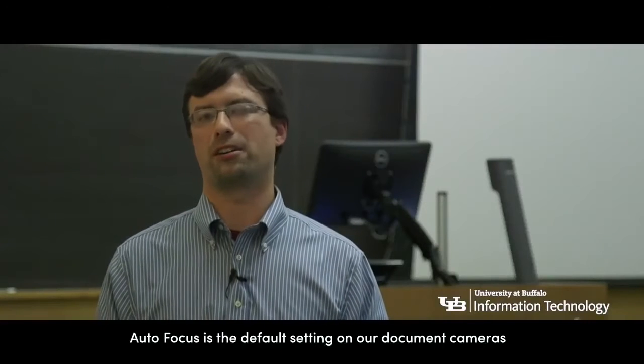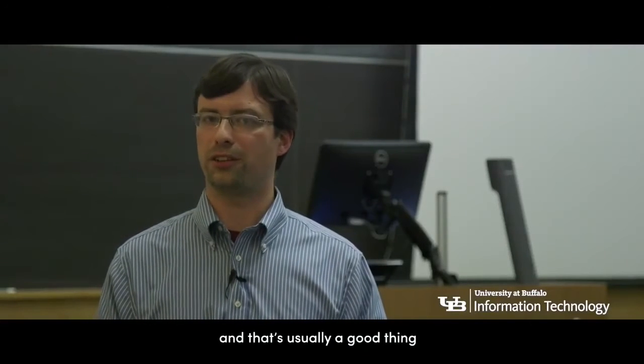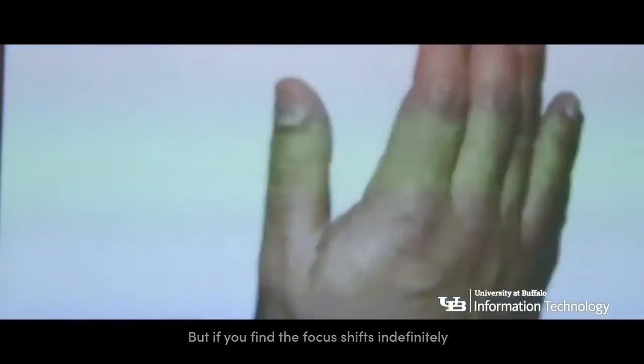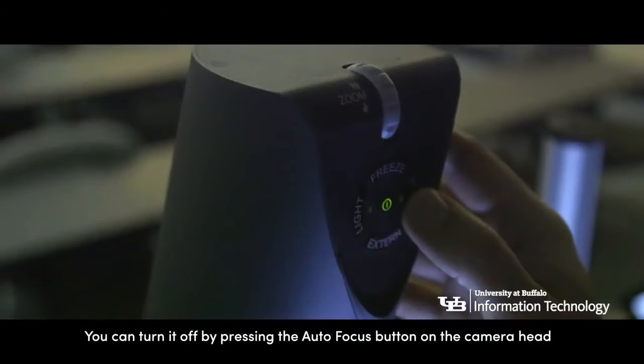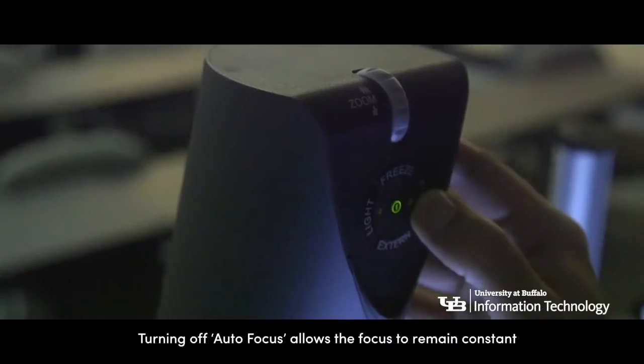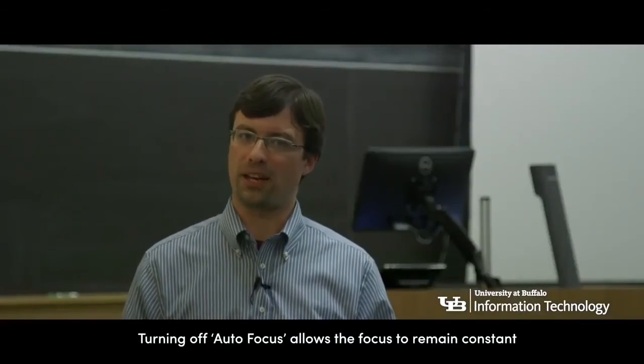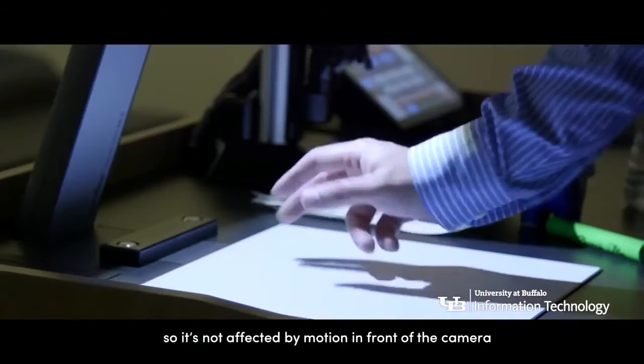Autofocus is the default setting on our document cameras and that's usually a good thing, but if you find the focus shifts indefinitely you can turn it off by pressing the autofocus button at the camera head. Turning off autofocus allows focus to remain constant so it's not affected by motion in front of the camera.